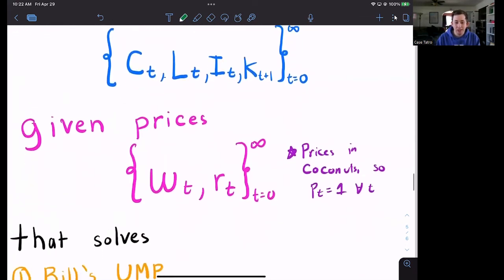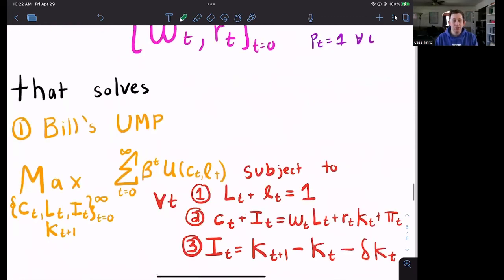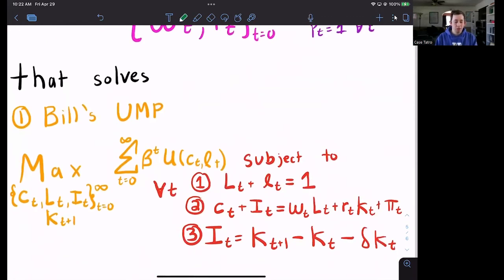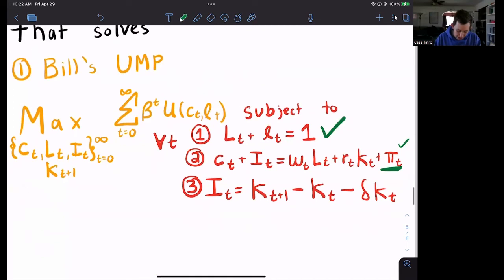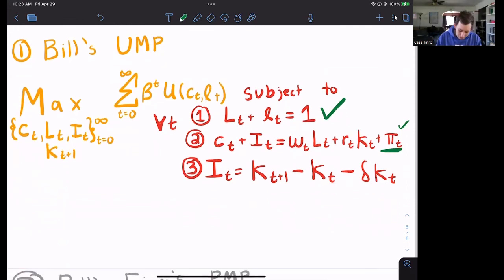What do this allocation and these prices solve? First they solve Bill's utility maximization problem, where Bill is choosing those same aspects that we saw before. We have this infinite time horizon utility maximization problem. Notice that we have his time constraint. So in every day, he can either work or sit on the couch. We have his budget constraint. Notice that profit is entering into this budget constraint because if Bill's firm makes some positive profit, then Bill gets to use that profit in order to buy coconuts or have coconuts because everything is in terms of coconuts.